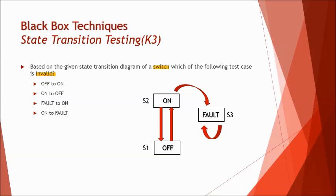Putting it all together, we have five test cases. S1 to S2, S2 to S1, S2 to S3, S3 to S3 are four valid test cases. Whereas one invalid, that is S3 to S2, which is not displayed in the diagram. Now what they ask you in the question is, which one of this is invalid? Off to on is displayed in the diagram, it is valid. On to off is also valid. On to fault is also valid. But when you talk about fault to on, it is invalid. And that's the right answer for this scenario.